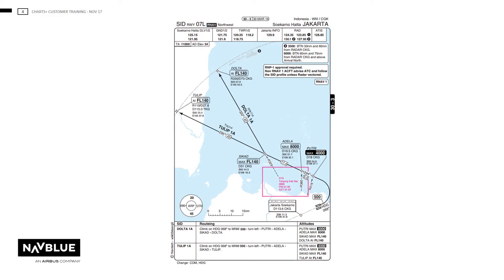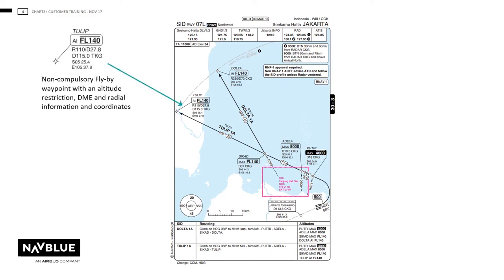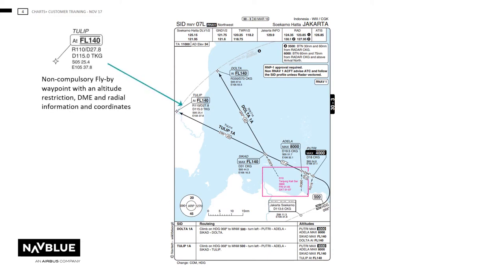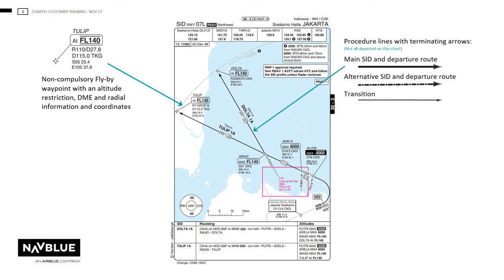Communications will be shown in order and the chart will be drawn to scale. A non-compulsory fly-by waypoint with an altitude restriction may be shown. Note that coordinates for waypoints will be shown on all SID charts. The main procedure lines with terminating arrows will be included, and SID designators will be shown along a segment on the procedure. If available, the FMS code will also be published.